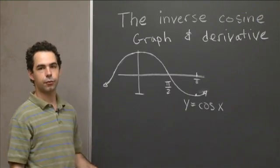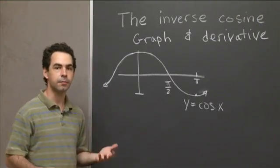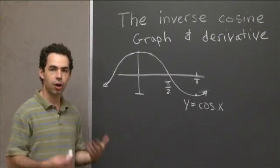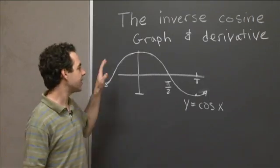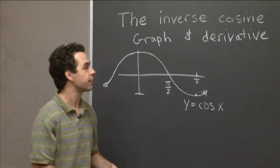So this is y equals cosine x. So in order to graph y equals arc cosine of x, we do what we do for every inverse function, which is we just take the graph and reflect it across the line y equals x.